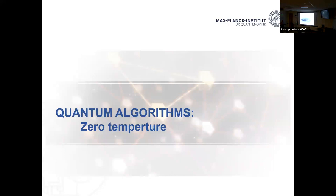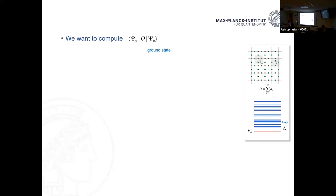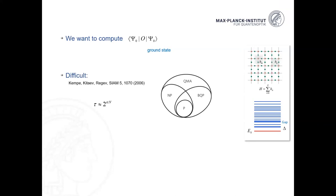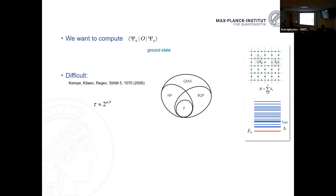What about equilibrium problems at zero temperature? The problem is formulated similarly: you're given a Hamiltonian with a spectrum of energy eigenstates, and the lowest one is the ground state. The goal is to compute properties of that ground state — expectation values of observables. With a quantum computer in full generality, without conditions on the Hamiltonian, this is very difficult — it's exponential. It will take exponential time on a quantum computer. As a decision problem it is QMA-hard.